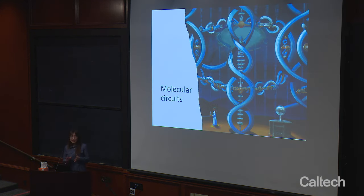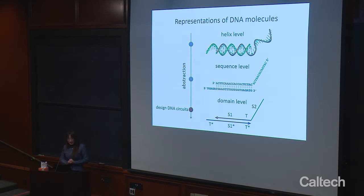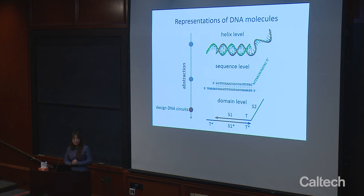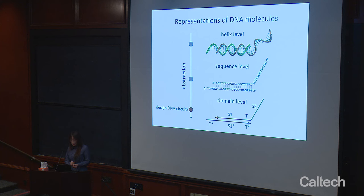Now let's jump into how to design and build molecular circuits. DNA strands can form a double helix if their sequences match—A pairs with T and C pairs with G—and each strand can be represented as a colored line with an arrowhead marking its orientation. A continuous subset of nucleotides can work as a functionally independent unit called a domain. For example, S1, T, and S2 are three different domains. Star indicates Watson-Crick complementarity—S1-star is complementary to S1. Because each domain can be assigned different sequence choices, one can focus on domains during the design process and design sequences at a later point.